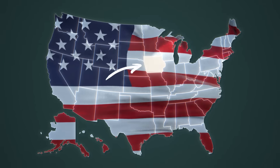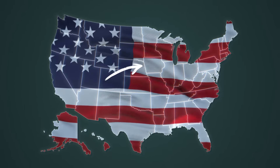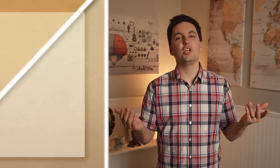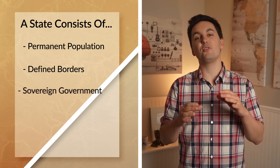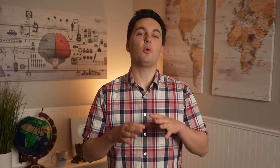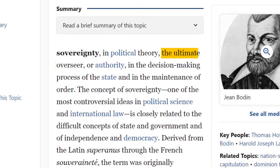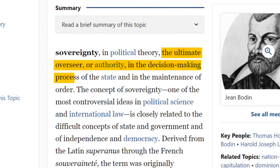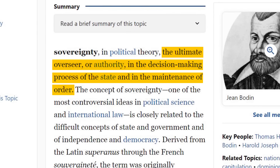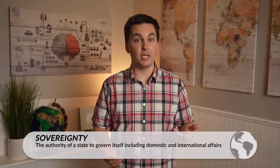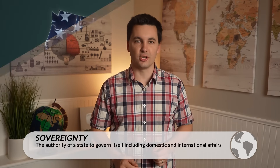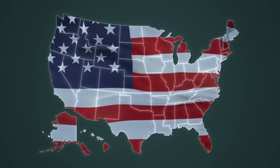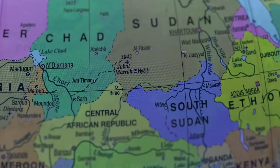To start, let's talk about a state. And no, I'm not talking about one of the 50 states of the United States. A state is a geographic area that has a permanent population, defined borders, a sovereign government, and is recognized by other states. One of the components of a state is sovereignty. Britannica defines sovereignty as the ultimate overseer or authority in the decision-making process of the state and in the maintenance of order. If a state has a sovereign government, it means the government has control over its domestic affairs and also international affairs. A state can be a regional government, like one of the states in the United States, but it can also be a country.